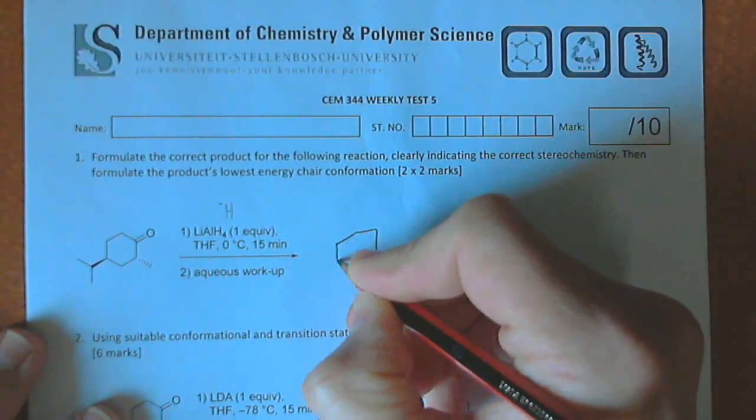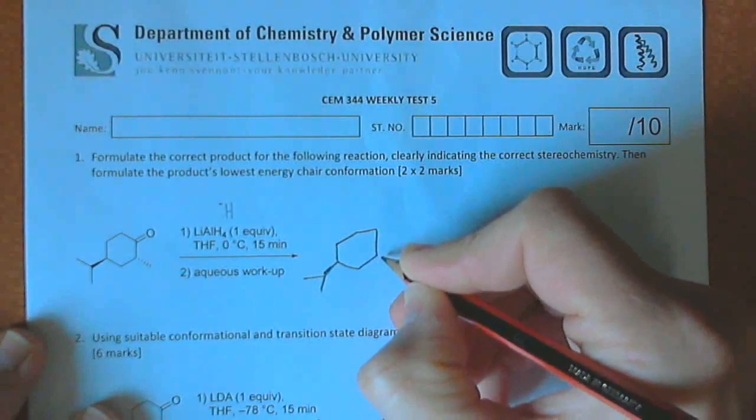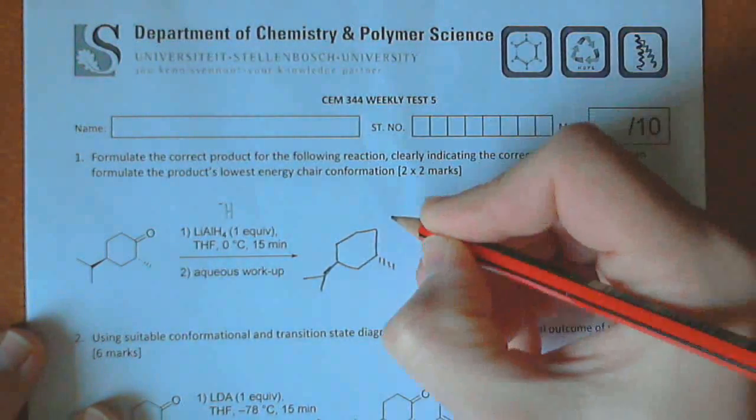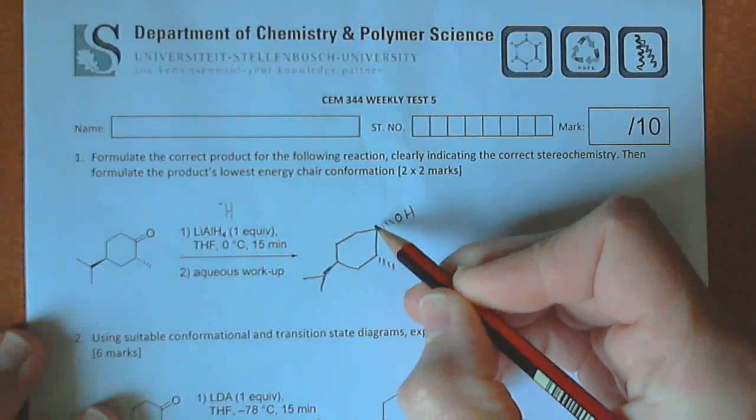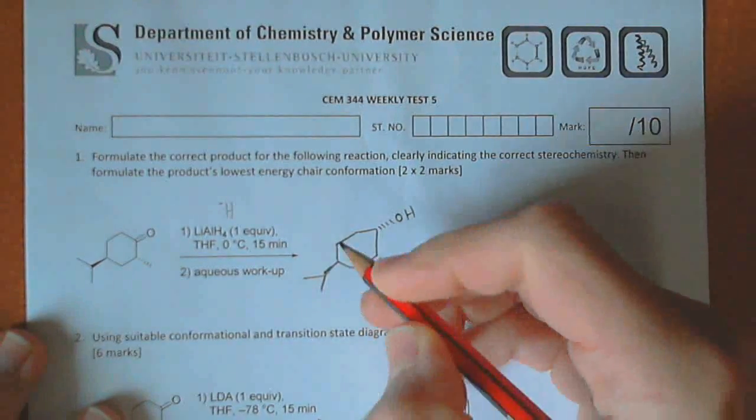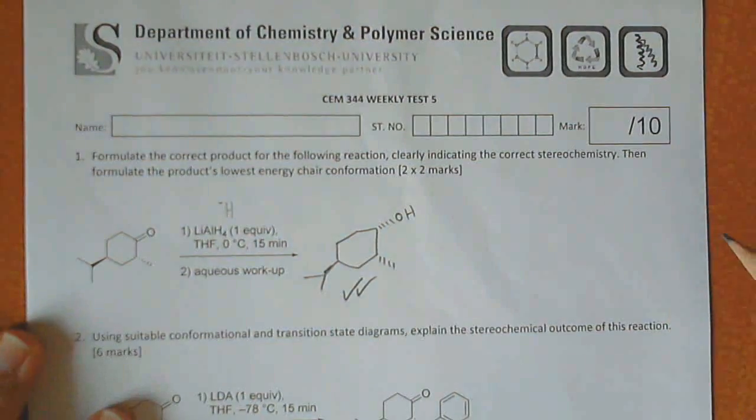So the product, very simply, was going to be: we've got the isopropyl up, the methyl group is still down, doesn't change, and the OH ends up down because the H came in from the top. This would have given you two marks if you got that correct.